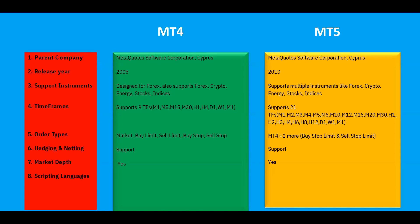The next comparison point is scripting language. When creating Expert Advisors, MT4 uses the MQL4 language and MT5 uses the MQL5 language. MQL5 is an advanced version of MQL4 — it is more efficient and a more advanced programming language overall.